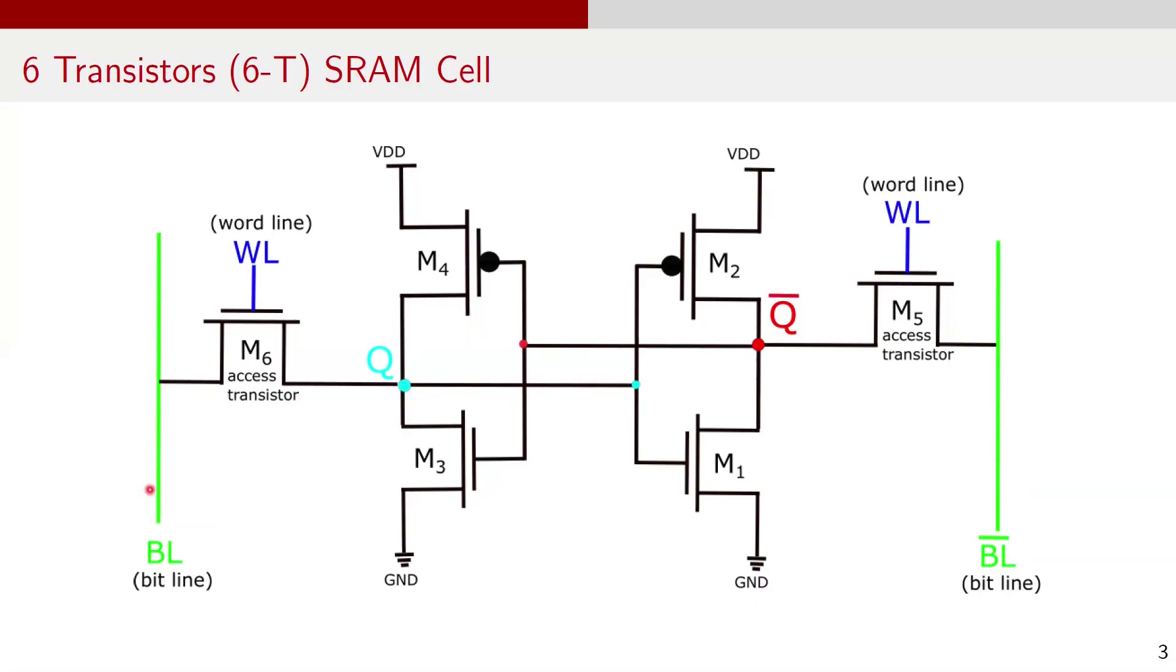The bitlines BL and BL bar are shown in green and serve as data input and output paths during the read and write operations. The stored data is held at the internal nodes Q and Q bar within the static latch formed by the cross-coupled inverters. These nodes maintain the value as long as the power is supplied.